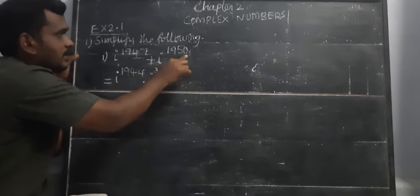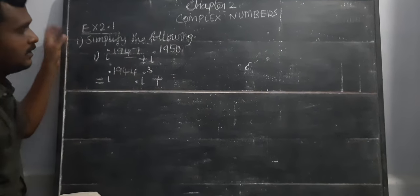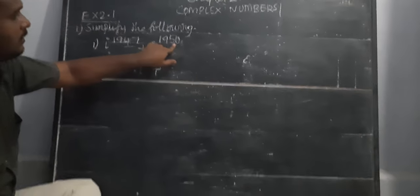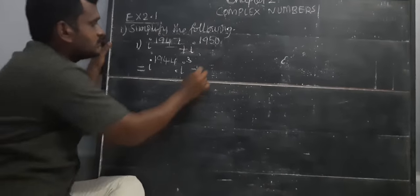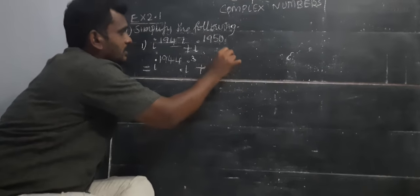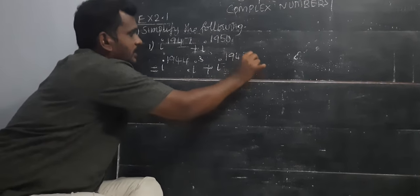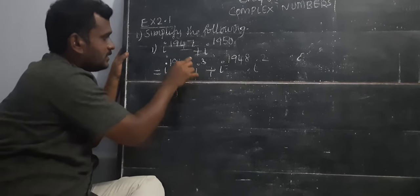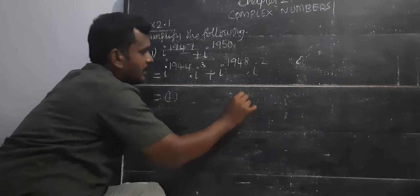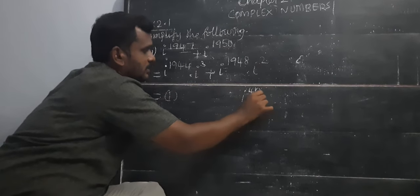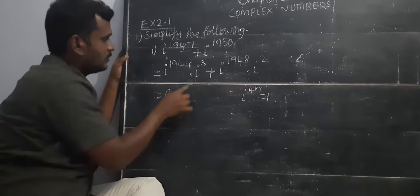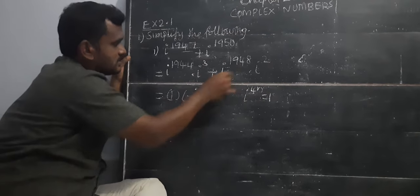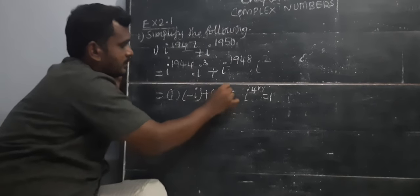For the second part, looking at the last two digits — 48 — 12 fours are 48. So i power 1948 times i squared. This value is 1, because i power 4n equals 1. Therefore this value is 1. i cubed value we have already seen is minus i. This value will be 1, and i squared value is minus 1.